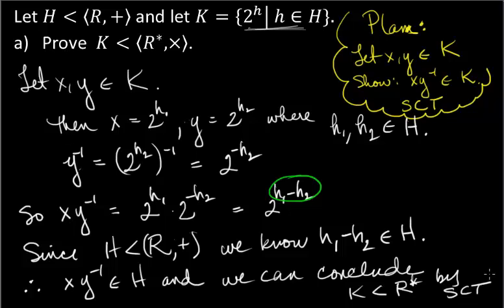Let X and Y be in the set, and show that XY inverse is in there. Just start writing: what does it mean to be in K? Write that down, find what Y inverse is, then combine XY inverse and see if you can prove that it satisfies the membership rules for K.